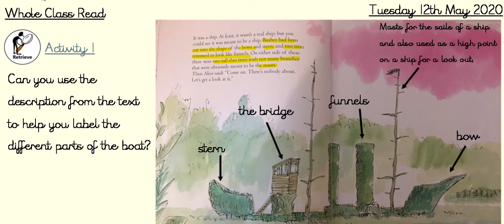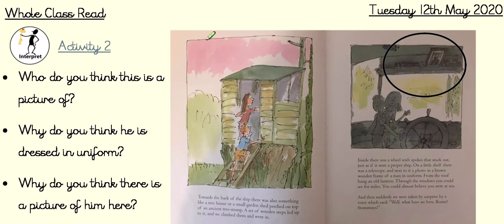Here's our second activity for today. In these illustrations, we can see there's a picture and there's a telescope, and it's described in the text. It says: 'On a little shelf, there was a telescope. And next to it, a photo in a brown wooden frame of a man in uniform.'